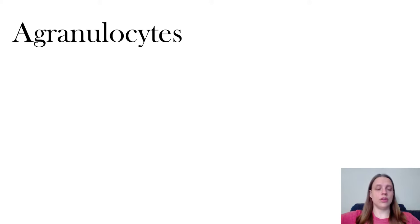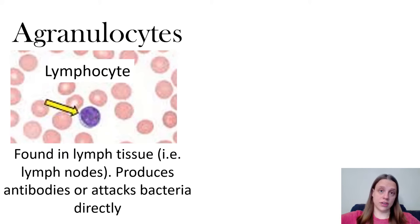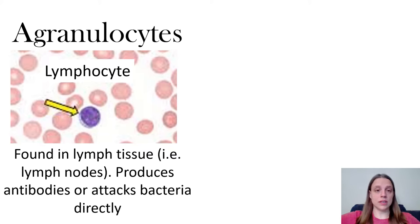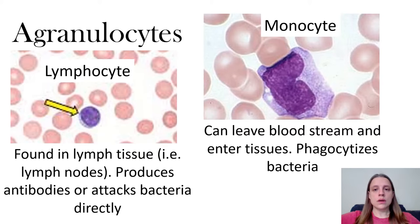The second main class of white blood cells are the agranulocytes — white blood cells that do not have granules inside them. We have lymphocytes, which are called lymphocytes because they're found in your lymphoid tissues like lymph nodes and your spleen. Some types of lymphocytes produce antibodies, and other types of lymphocytes attack bacteria directly — that's something you'll learn in greater detail when you reach the immune chapter.